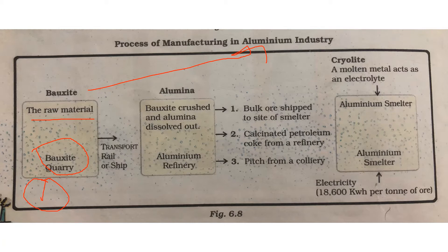This bauxite is carried with the help of railway or ship, as it is very heavy and bulky. It is then taken to a refinery. A refinery is the place where the impurities are removed from the raw material. Here, bauxite is having impurities which have to be removed.